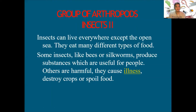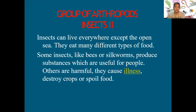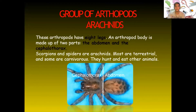Insects can live everywhere except the open sea. They eat many different types of food. Some insects, like bees, produce substances which are useful for people, but there are also harmful insects that can cause illness, destroy crops, or spoil our food.